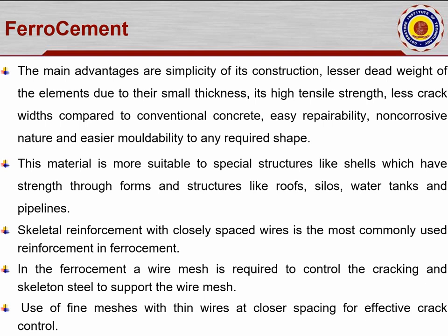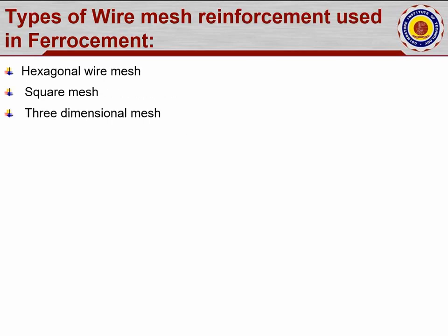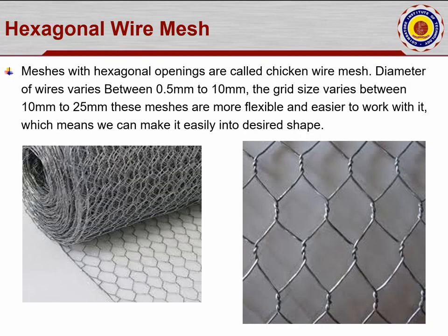The types of wire mesh reinforcement used in ferrocement are: hexagonal wire mesh, square mesh, and three-dimensional mesh. The diameter of wires varies between 0.5 mm to 10 mm depending on the structure. The grid size varies between 10 mm to 25 mm. These meshes are more flexible and easier to work with, so any shape can be adapted and sections can be easily folded.